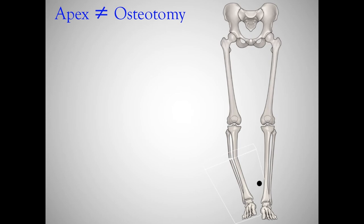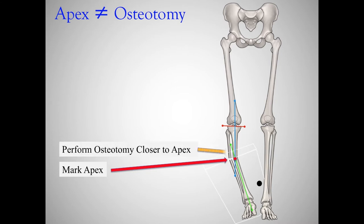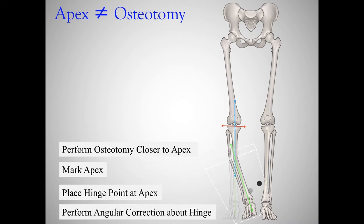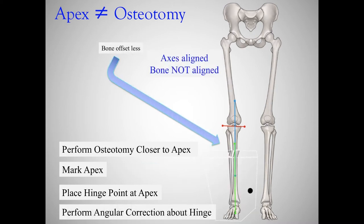Looking at the same example with the osteotomy even closer to the apex: osteotomy with hinge point at the apex, we rotate, minimal displacement, you have aligned axes, but the bone is not aligned. Now, you can't see axes in the operating room — all you can see is bone margins. Many surgeons create an error by shifting the bone over to get bone margins aligned — you've just created a translational deformity.